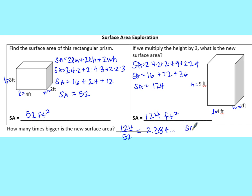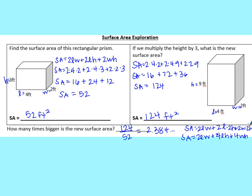We can't say there was an exact scale factor here — we multiplied the height by 3, but the surface area didn't increase by 3 times like the volume did. The original SA formula is SA = 2LW + 2LH + 2WH, but with height multiplied by 3 (written as 3H), the formula becomes SA = 2LW + 2L(3H) + 2W(3H), which simplifies to SA = 2LW + 6LH + 6WH for this specific rectangular prism.